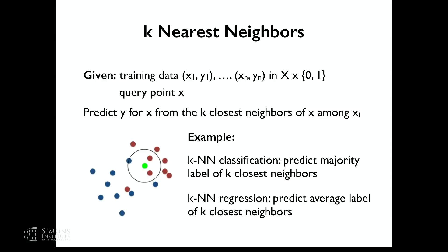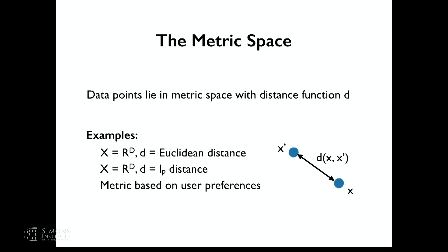An example is k-nearest neighbor classification, where you predict the majority label of the k closest neighbors, or weighted majority labels where weights are based on distances. For k-nearest neighbor regression, you predict the average label of your k closest neighbors. When we talk about 'closest,' we assume there is some underlying metric space and a distance function d between any pair of points x and x prime — this could be Euclidean distance, any LP distance, or application-specific distances.